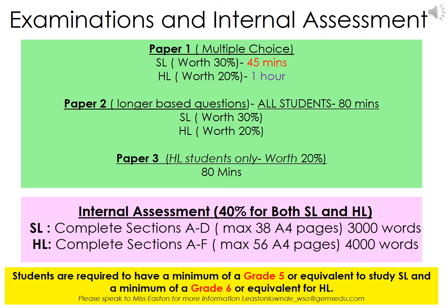Here is a breakdown of the individual examinations. There are 3 papers for HL students and 2 for SL students. Paper 1 is a multiple choice paper, with standard level students having a 45-minute paper and higher level students having a 1-hour paper, as there are more questions with higher level content. Paper 2 is longer based questions, all students sit the same examination, and it is 1 hour and 30 minutes long.